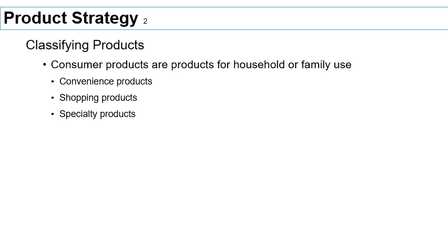These are products that, if you see them, there is very little information search — they are right there and you quickly make a decision about whether you want them or not. These are also traditionally low-priced. Convenience products are generally not high-cost items.